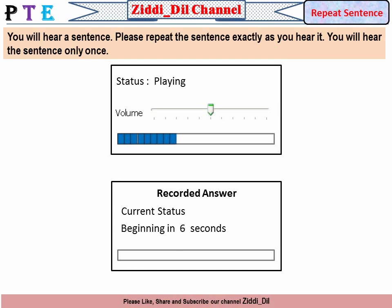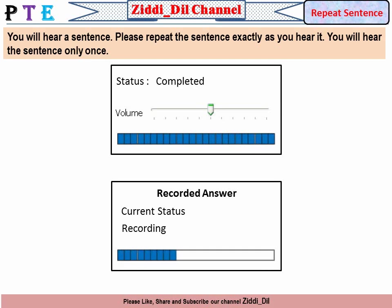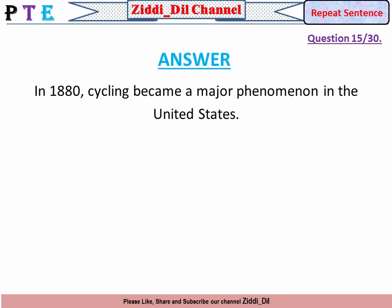In 1880, cycling became a major phenomenon in the United States.